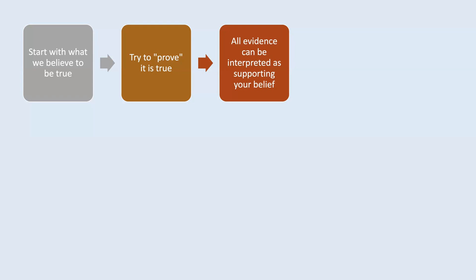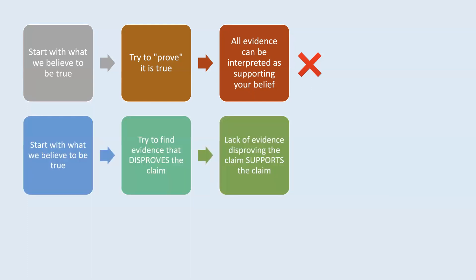We talked about police detectives as an example: if you think something is true and you start to look for evidence that confirms it, you're going to interpret things as evidence. So this is not the way that science works. This is not the right way to answer a research question. What we do instead is we start with what we believe to be true, and then we try to find evidence that disproves the claim. The lack of evidence disproving the claim supports the claim.